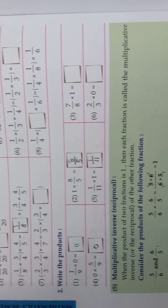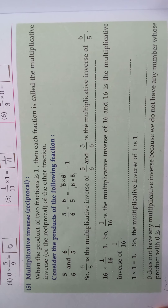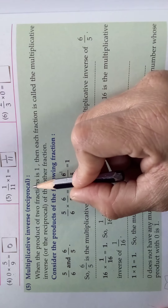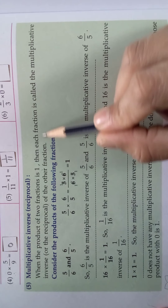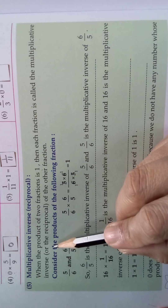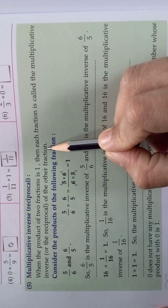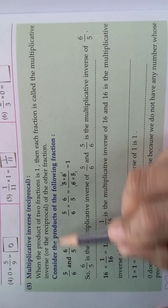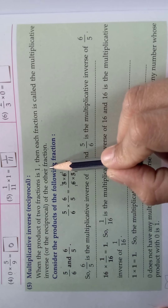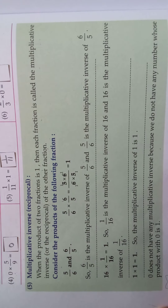Now we are going to see the next topic: multiplicative inverse, or reciprocal. When the product of two fractions is 1, then each fraction is called the multiplicative inverse or the reciprocal of the other fraction. This is very important — keep it in mind.